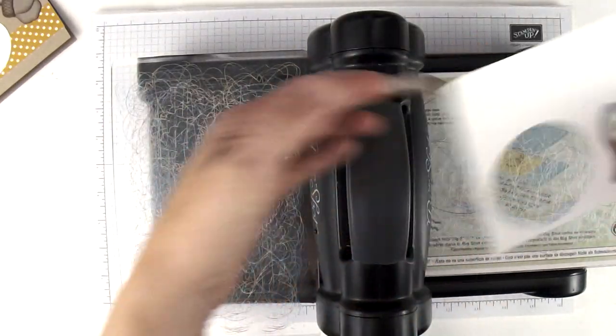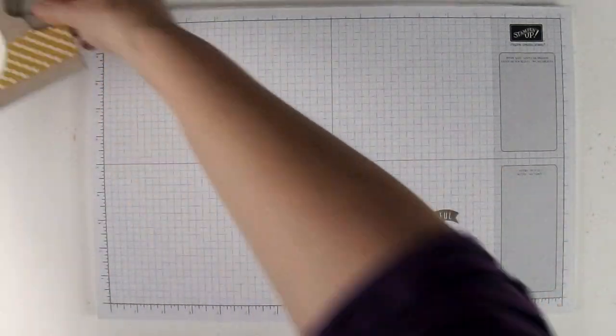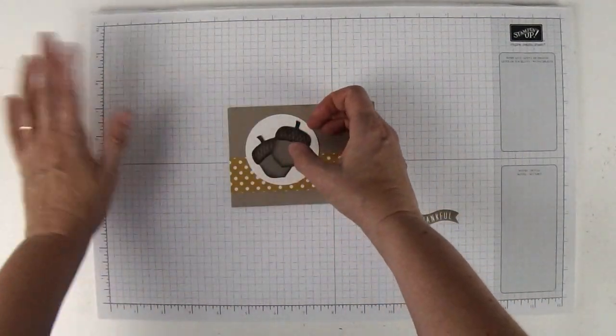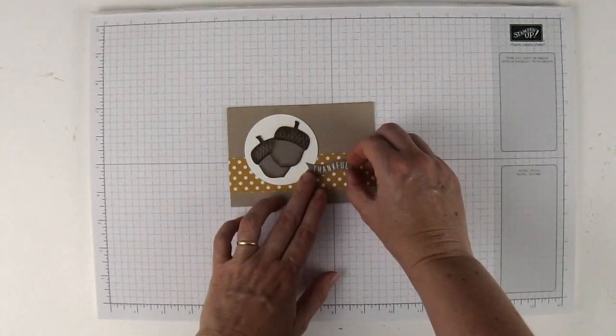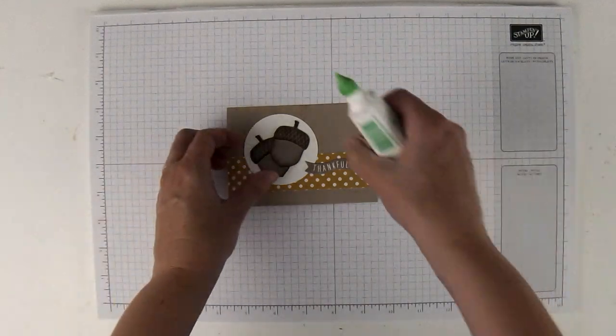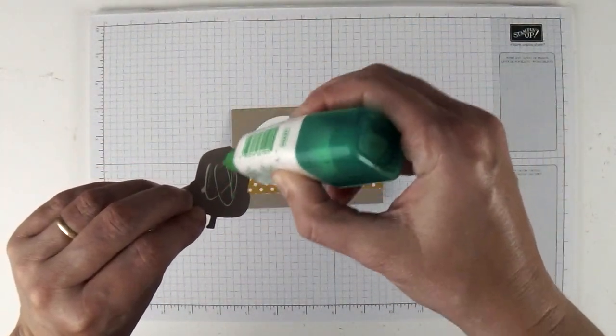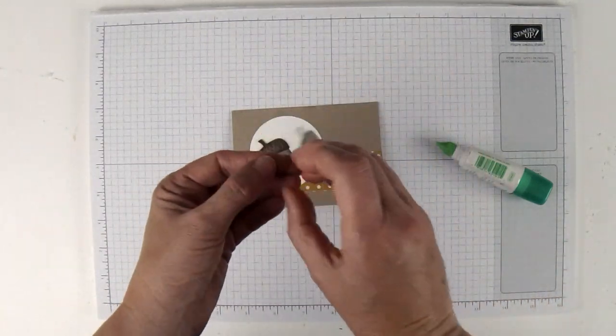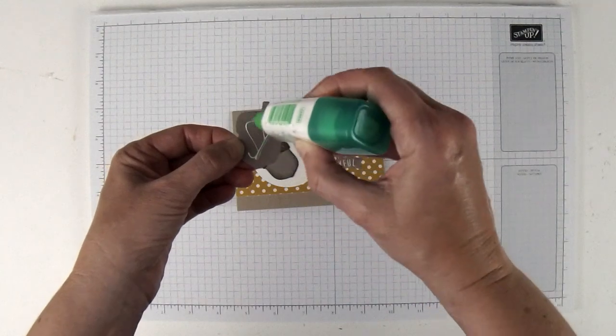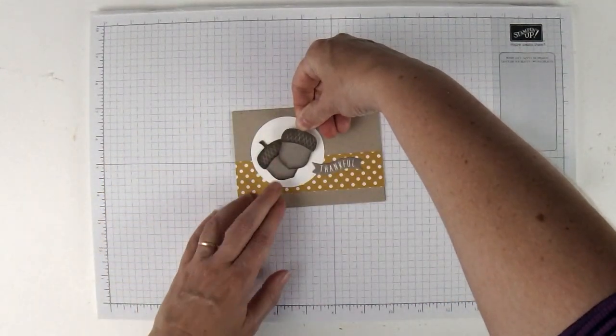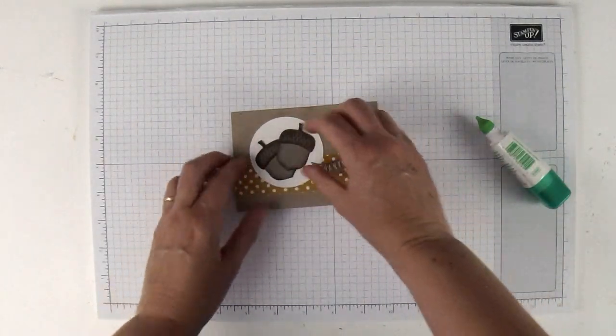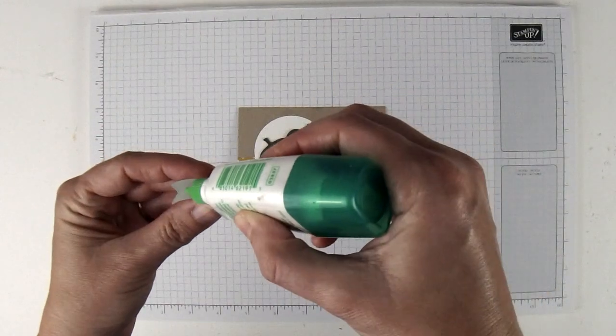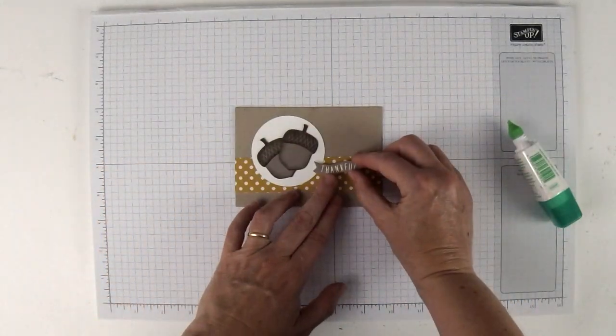Now I can bring my pieces back in. Let's just look at how I want to arrange it. Always a good idea to arrange it on your piece first and make sure you have everything where you like it. I'm going to put some Tombow on the first one, then on my second one, and then on my little banner.